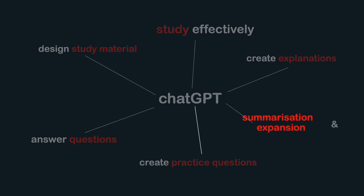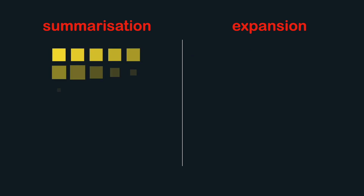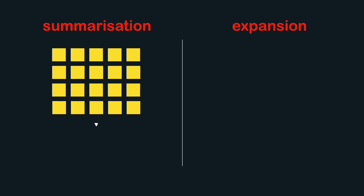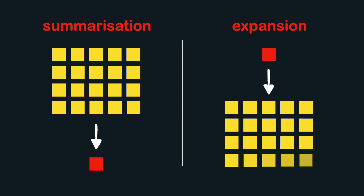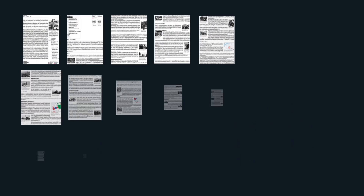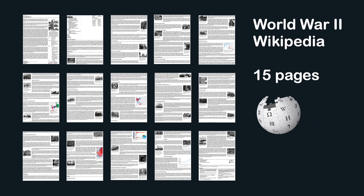Let's take a look at summarization and expansion. Summarization is great if you need to get the main points out of a long text quickly, and expansion is great for extracting more detailed information from overly generalized content. Let's look at both separately. The World War II Wikipedia article is 15 pages long.